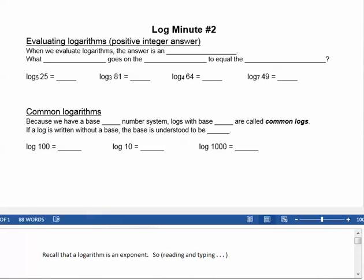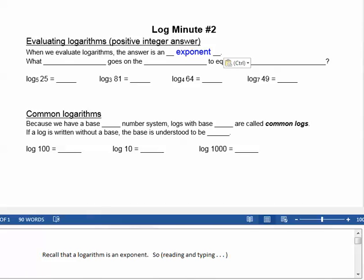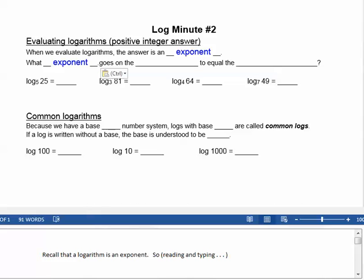Recall that a logarithm is an exponent, so when we evaluate logarithms, the answer is an exponent. What exponent goes on the base to equal the argument?